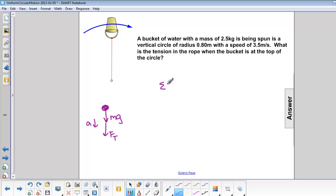We're going to use sigma F equals ma. In this case, since everything is pointing downward, let's make down positive and up negative. So we have mg plus force of tension equals mv squared over r.